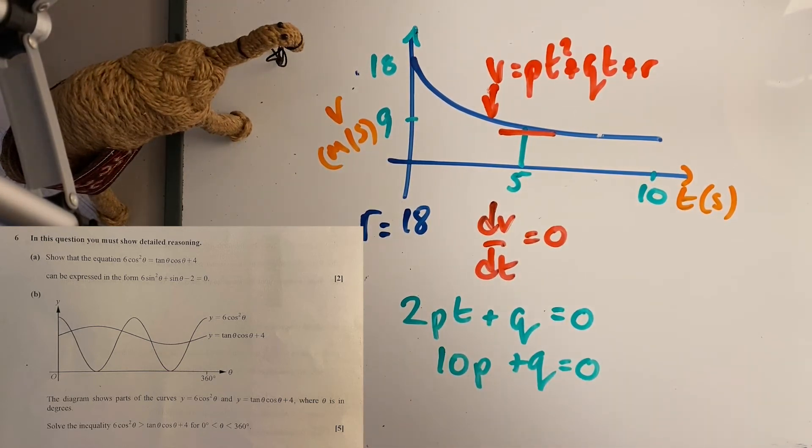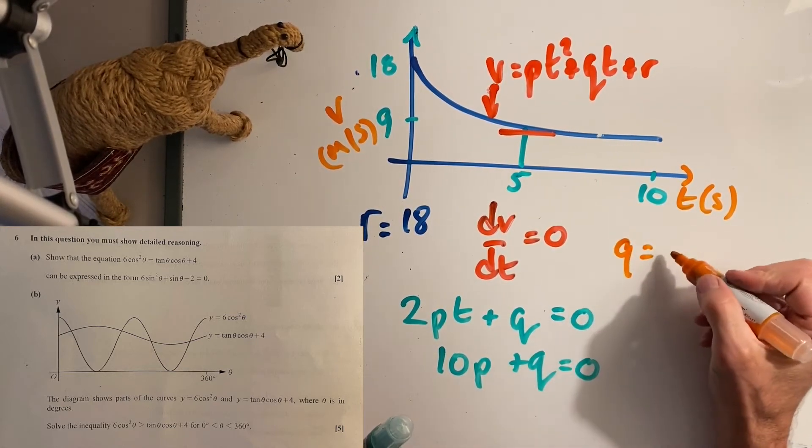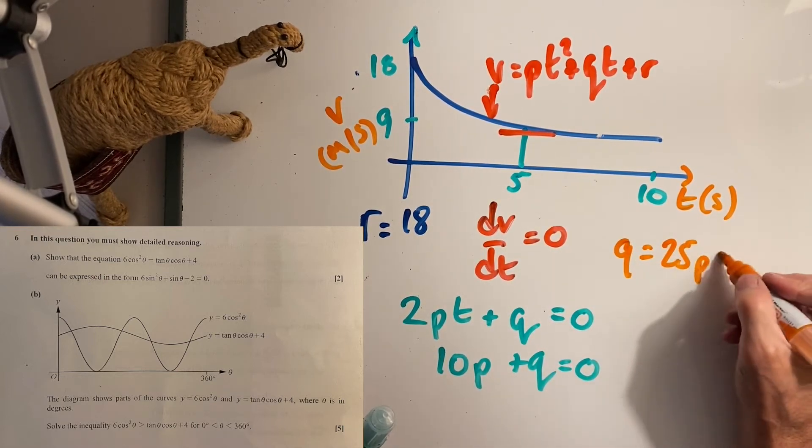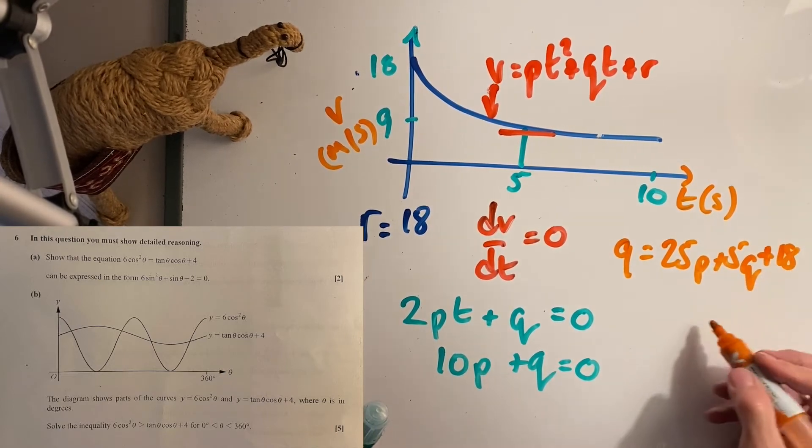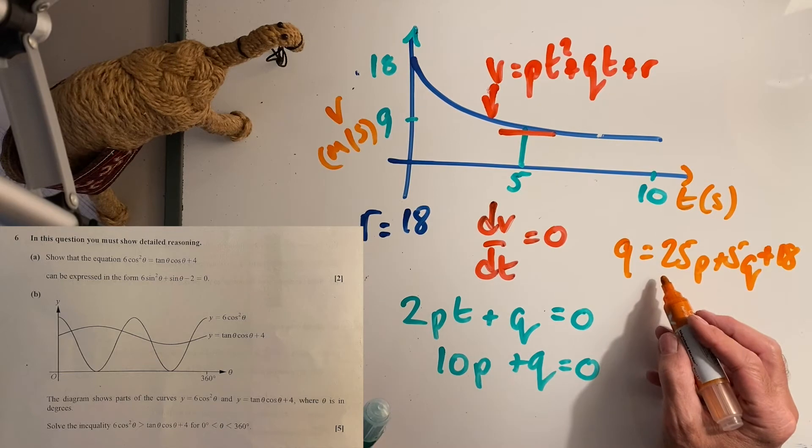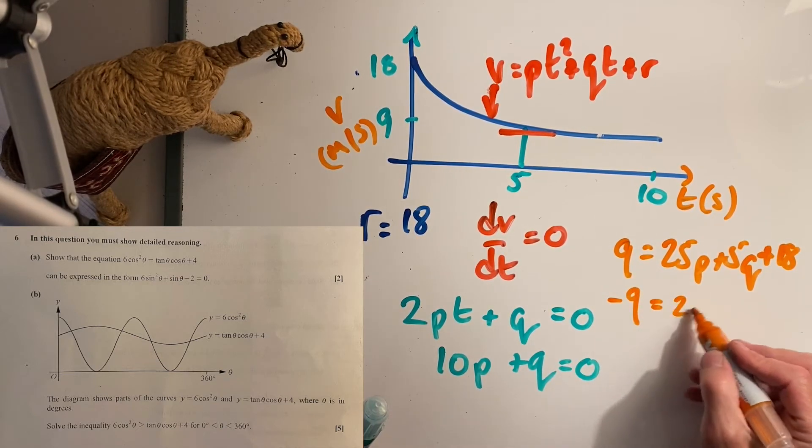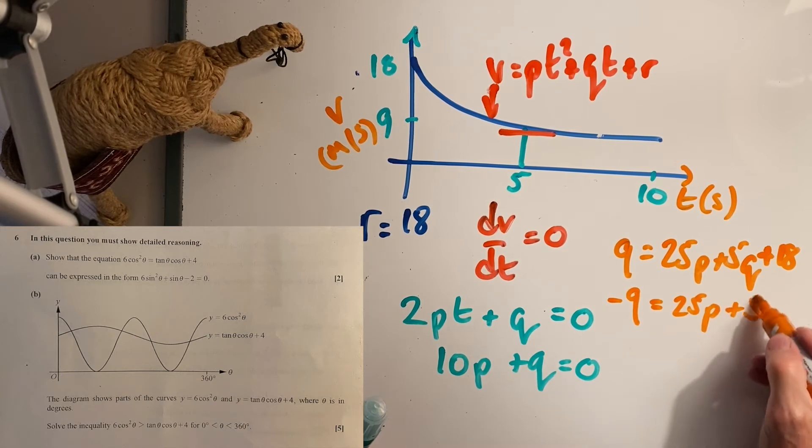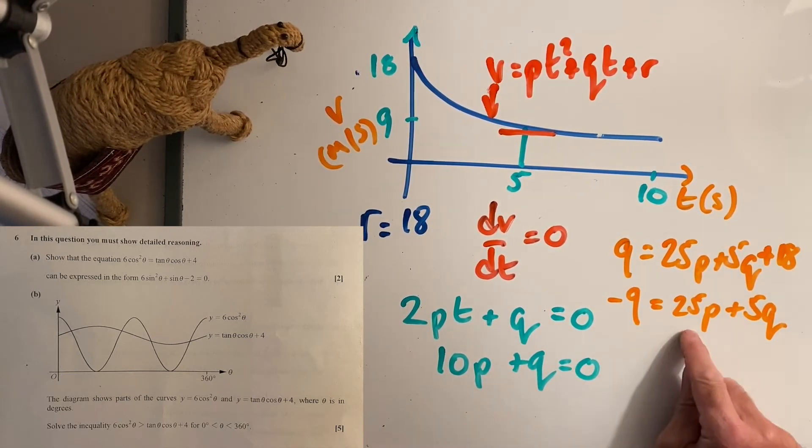Then I can find the value. That is 9 equals 5 squared, so it's 25p plus 5q plus r, which I know is 18. Therefore, taking 18 from both sides, it's negative 9 equals 25p plus 5q. Now I've got two relationships here.